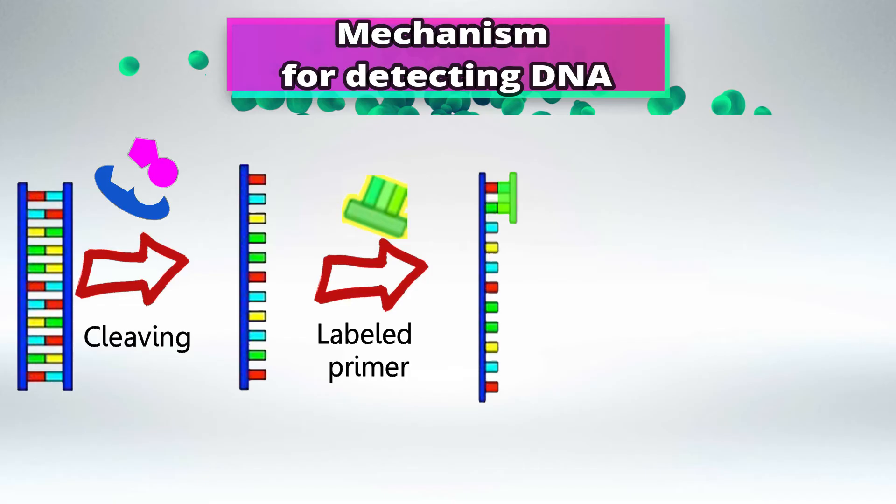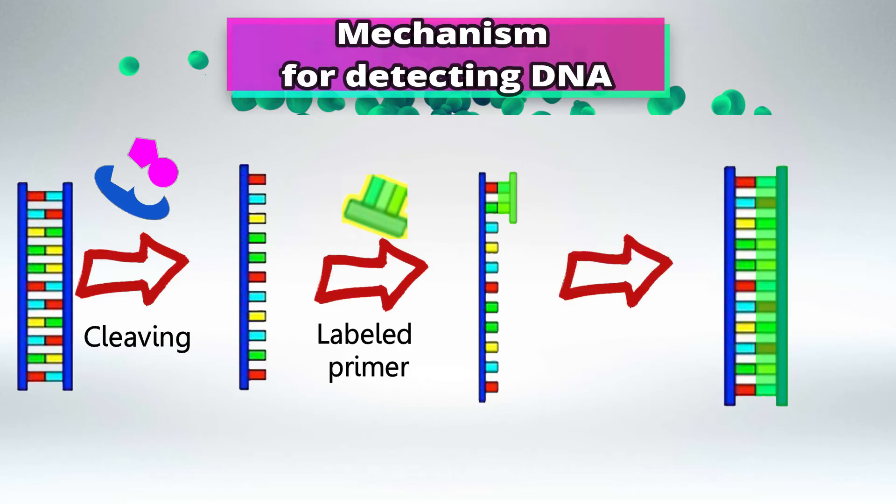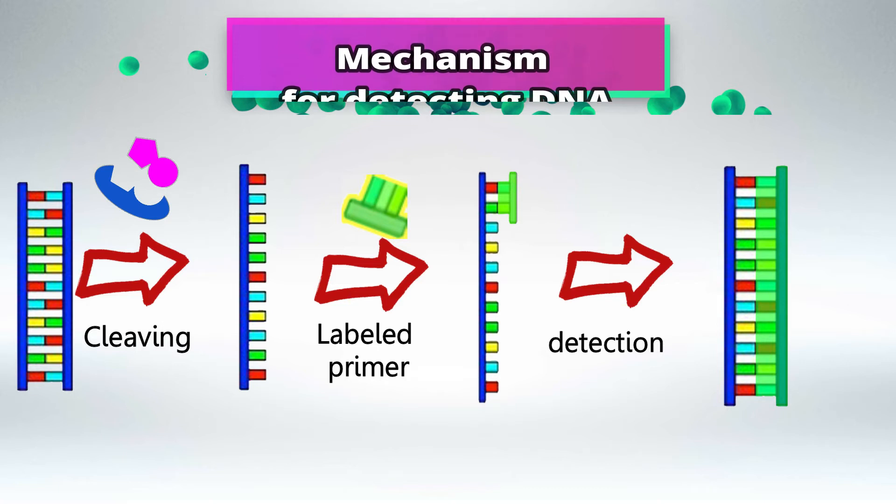For example, if we're looking for HIV DNA, we'll add labeled primers to that HIV DNA. If that sample of DNA did in fact contain some HIV DNA, this primer that is specific for that HIV DNA will link to this segment and then we will be able to detect it.